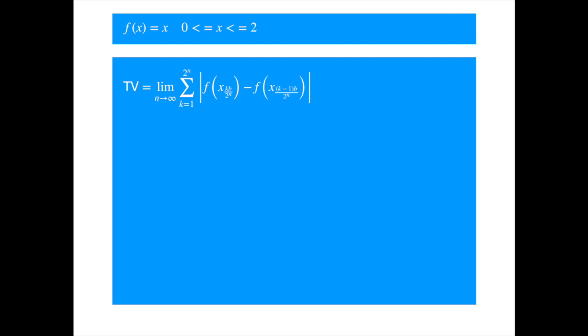Let's reproduce the total variation formula. B is the length of the interval, which is 2 in this example. Replacing f(x) with x, because our function value is equal to x by definition, we get. Now the length of each sub-interval is b over two to the power n, so we get. We ignore the absolute value because the length is positive by construction. Summing a constant two to the power n times means we multiply it by two to the power n, so we get, where b is equal to 2.